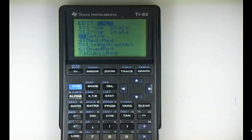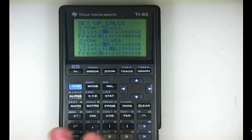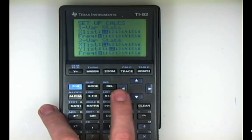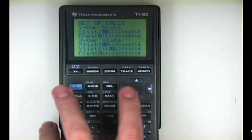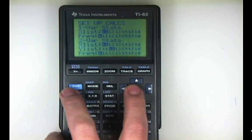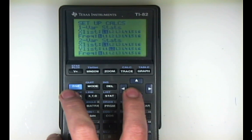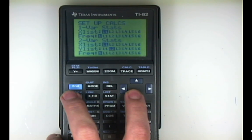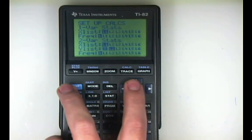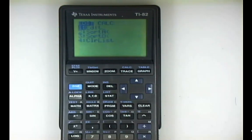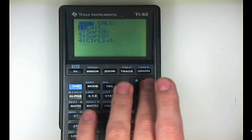Before I bring up some statistics, let me talk about the setup. If you go into the setup, you'll notice it asks what you always want to use for your x list. Most people set the x list to list one, frequency is one, and with two-bar statistics, x list is usually L1 and y list is usually L2. That's the standard setup.